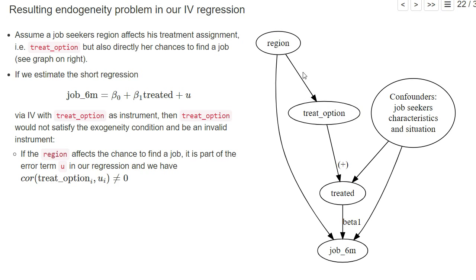The problem is that if the region affects our instrument but also directly the dependent variable, it's like a confounder and our instrument treat_option would be endogenous. In this short regression it would be correlated with the error term because the region affects the probability to find a job and also affects the treatment assignment. So the correlation between treat_option and u is not equal to zero.